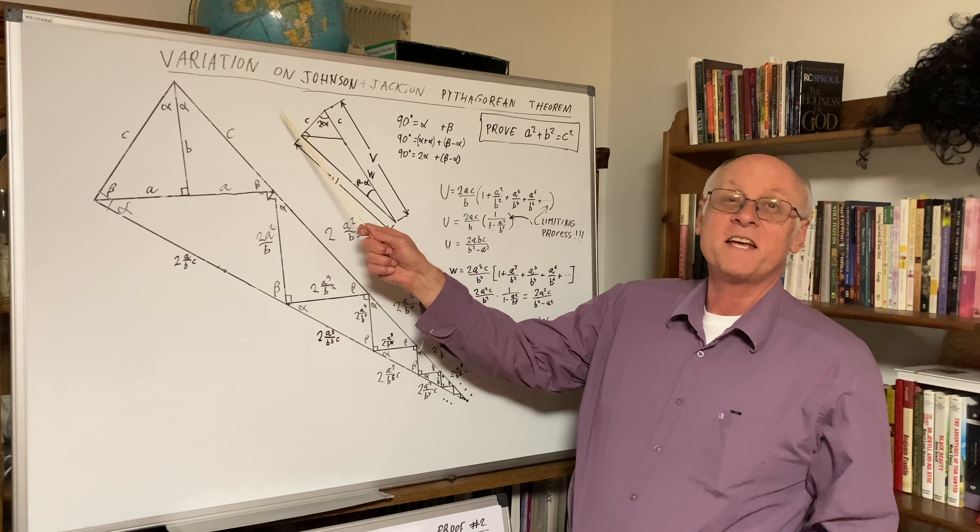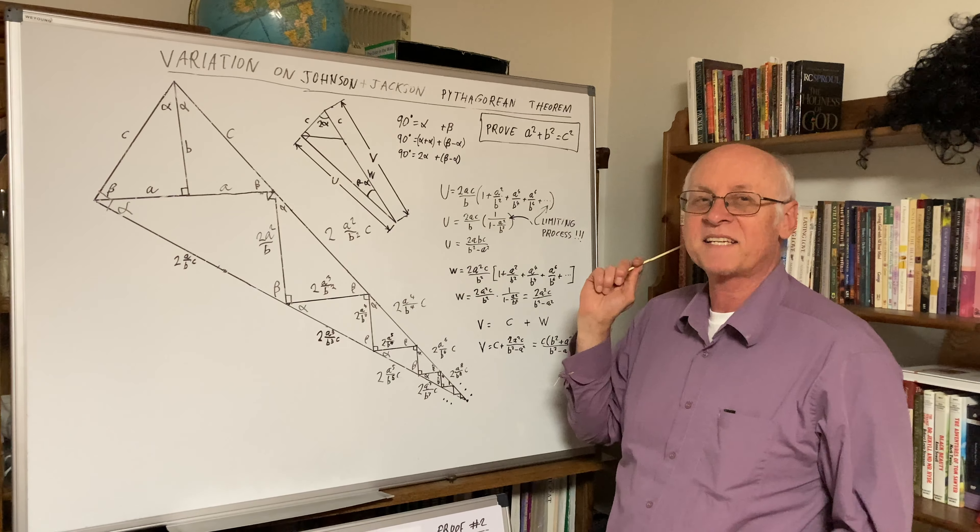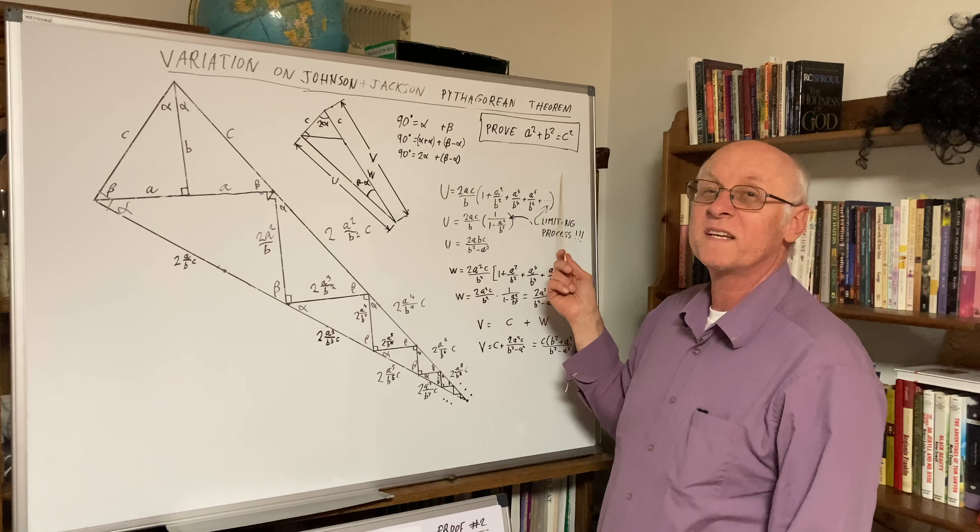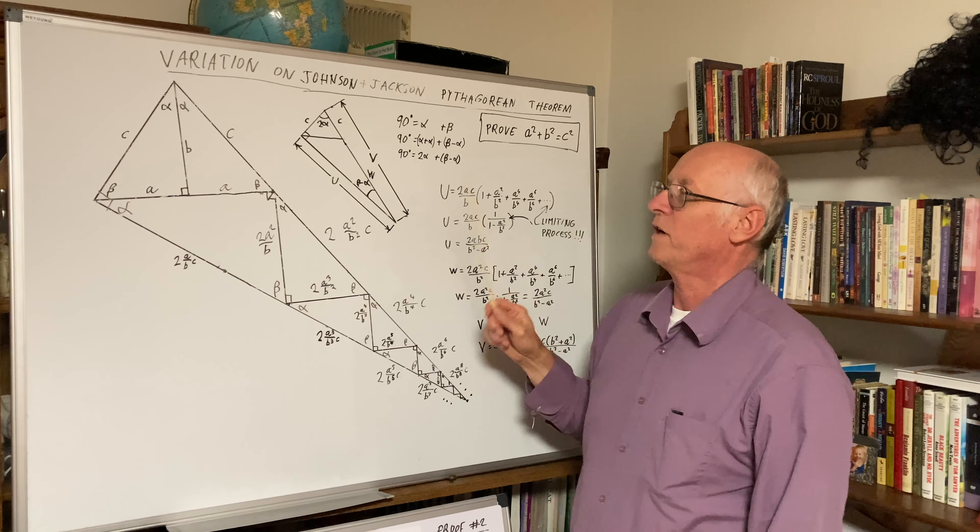Today we will do another variation on the Johnson-Jackson Pythagorean theorem proving C squared equals A squared plus B squared.